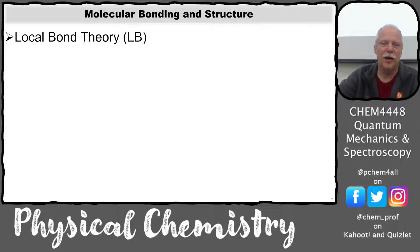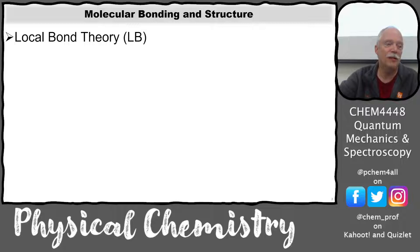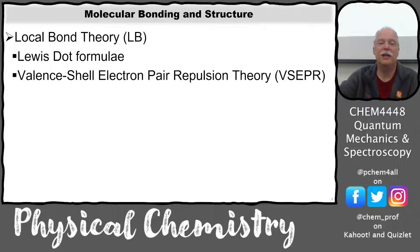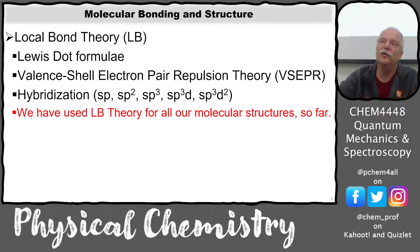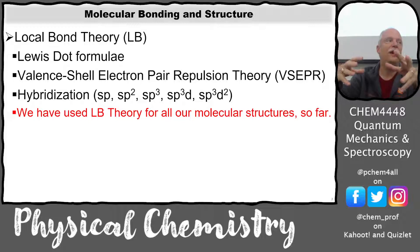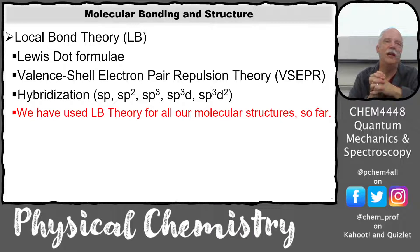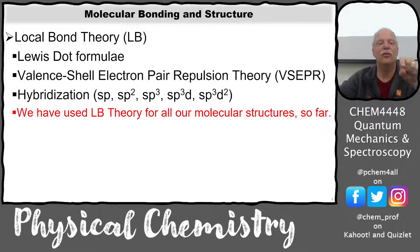Let's talk about molecular bonding and structure. Up to this point, you've been well-versed in local bond theory — Lewis dot formulas, valence shell electron pair repulsion theory where you let everything repel and go into three dimensions, and that's where you get the hybridization: SP, SP2. This is what we've been using for molecular structures to build a molecule, find its structure, and determine the point groups using local bond theory.